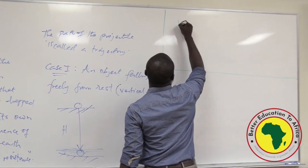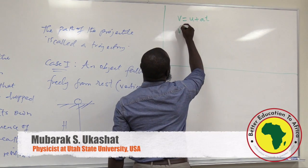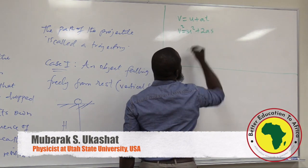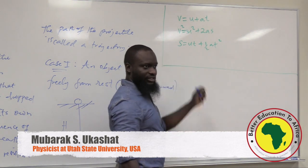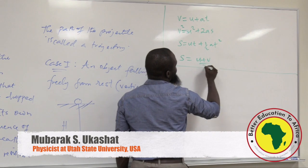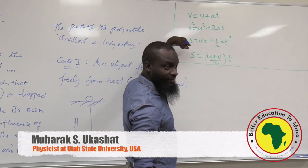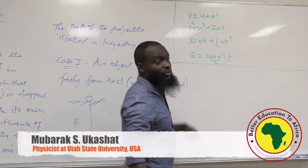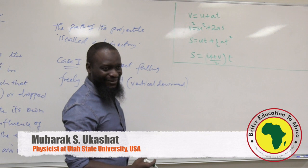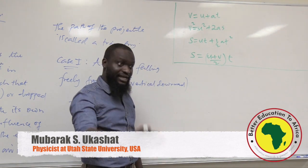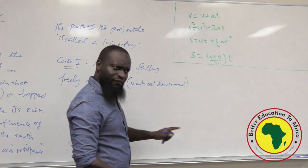The wrong assumption is: when an object is going up, use negative g (minus sign); when falling down, use positive g (plus sign). So for going up: V equals U minus gt; V squared equals U squared minus 2gh; h equals Ut minus half gt squared. For falling down: V equals U plus gt; V squared equals U squared plus 2gh; h equals Ut plus half gt squared. These equations work but the assumption is wrong — I'll explain the inconsistency and then solve problems both ways.